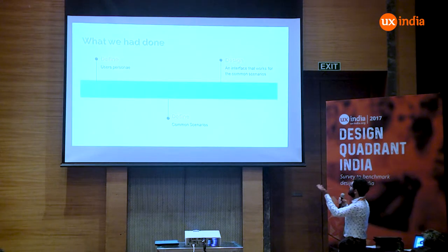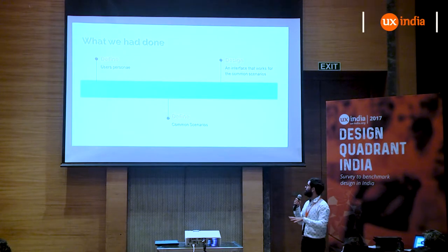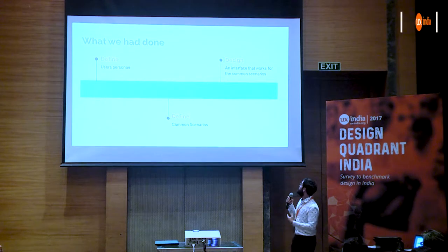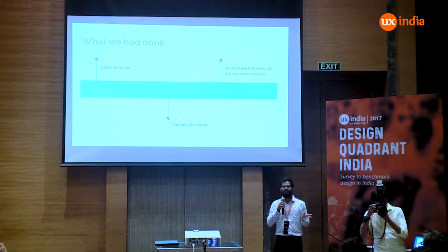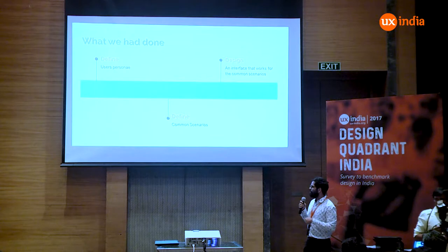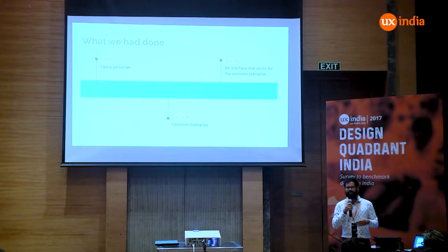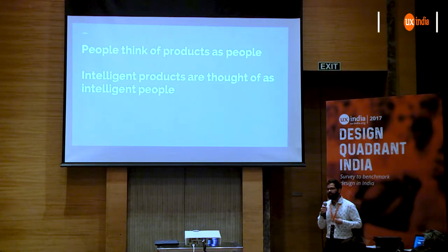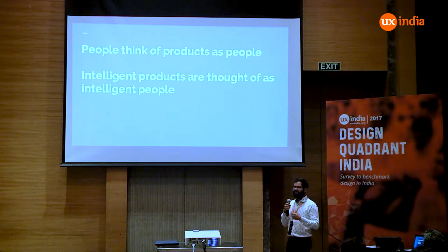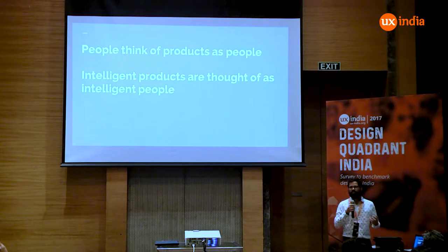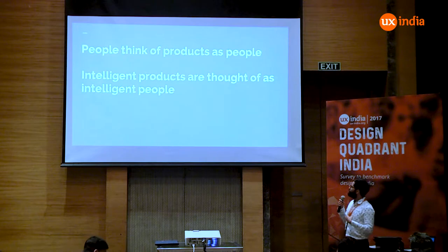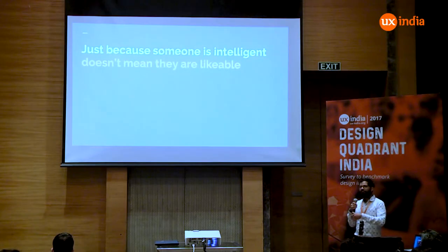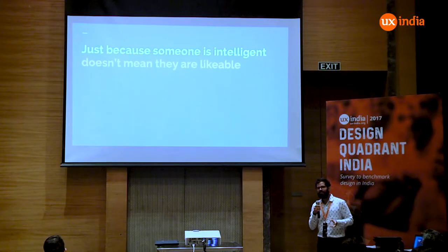The reason that happened is because we used the old design process. We defined personas, then we defined some common scenarios that these personas go through, and then we designed an interface that works for most of these scenarios. But then it did not work. And it turns out that people think of products as people — this was a fundamental shift for us. An extension of that is: intelligent products are thought of as intelligent people, not just products with some AI-based component in them. So how do we make sure that we design our product to be perceived as an intelligent person, not just as a product with some recommendations in it?